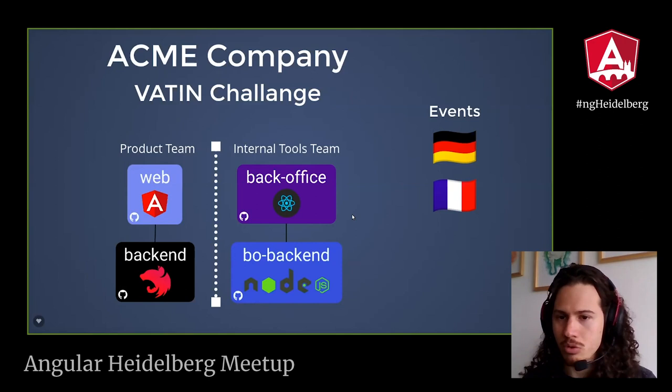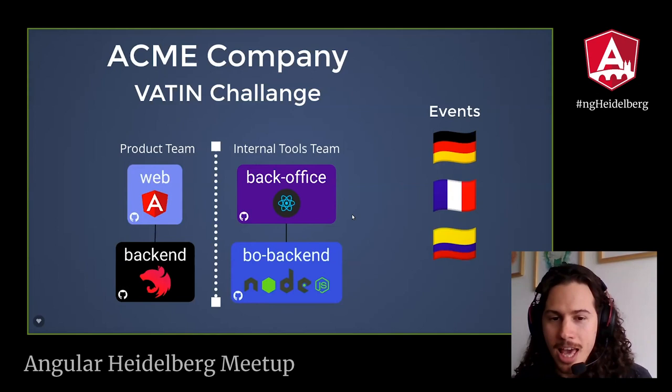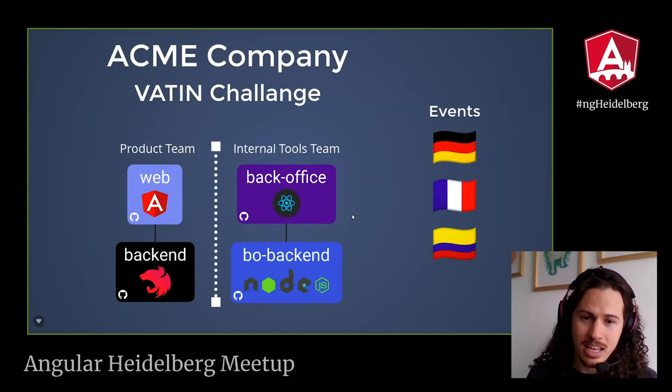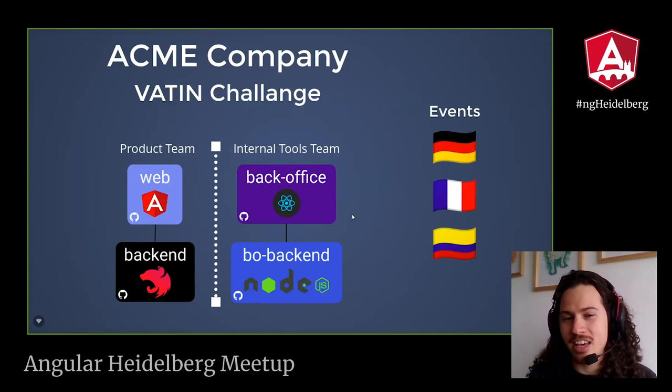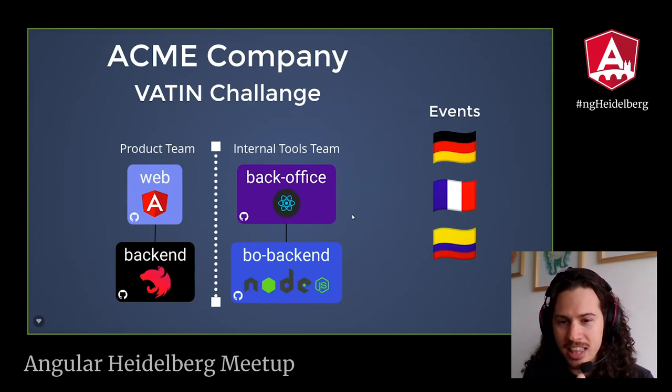Our company super succeeds, and we decide to fund an internal tools team to manage the back-office used by the call center, built on React because the back office is simple. We create a repository for the back office and another for its backend — separate repositories. We need to copy and paste the code we used on the web and backend into these new repositories. Right now we have our code on four repositories. We decide to open our market to Colombia, and we need to do four pull requests. This time both teams need to coordinate the launch and align their backlogs.